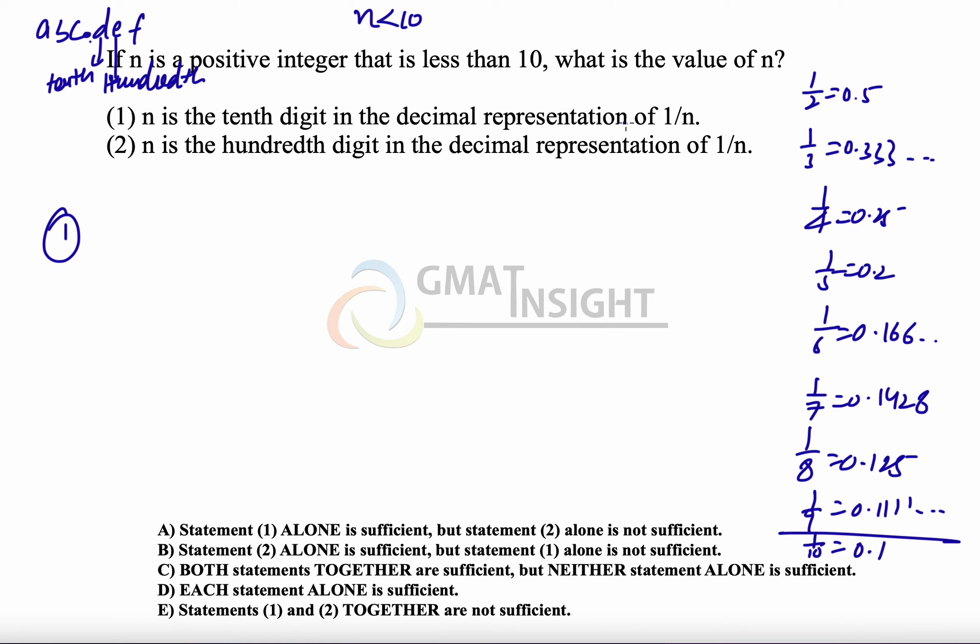n is the 10th digit in the decimal representation of 1 upon n, which is true only in case of 3. Therefore, the first statement gives us the unique value. Not in any other value would you see the 10th digit is same as the value, the number. Therefore, the first statement alone is sufficient.